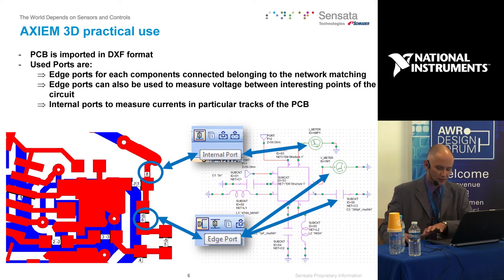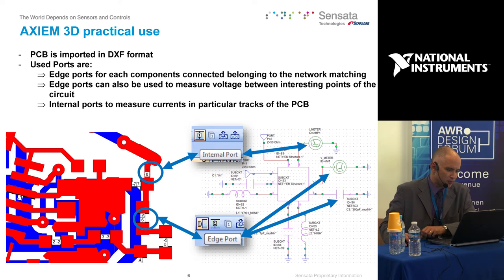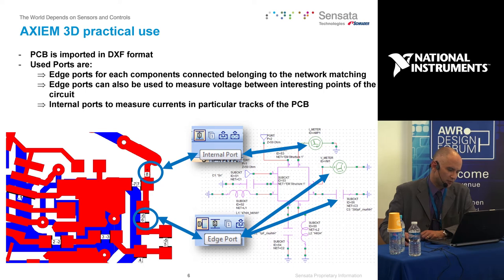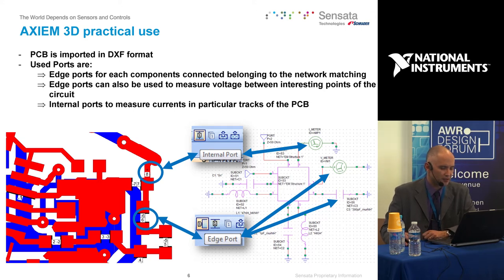Which ports do we use in Axiem? The first are edge ports, used to connect components to the EM structure. It's very easy to connect, for example, a capacitor or inductor at a particular place on the board. We also use them to measure voltage at particular points. The second type are internal ports, which are handy for measuring the current inside a particular track.